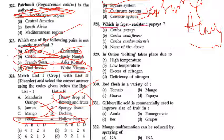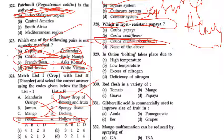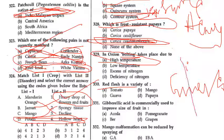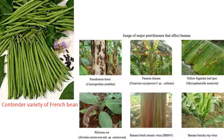Which is frost resistant? Papaya याद रखेंगे — Carica monoica. Onion bolting होता है — bolting हमने discuss कर चुके हैं, sprouting हो जाता है before maturing, high temperature की वजह से होता है, इसलिए onion को around 1°C या minus में भी store कर सकते हैं. Red flesh होता है guava का याद रखेंगे. Gibberellic acid अगर apply करेंगे, grapes का size increase हो जाएगा — लेकिन यह human health के लिए अच्छी बात नहीं है. Contender variety French bean का है.